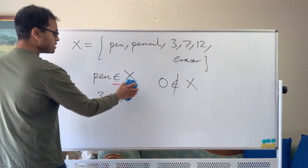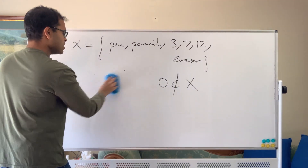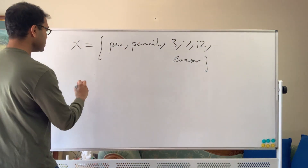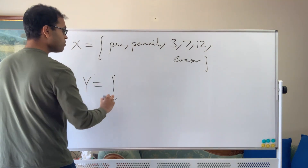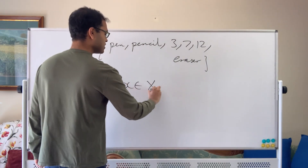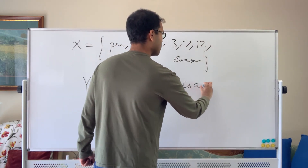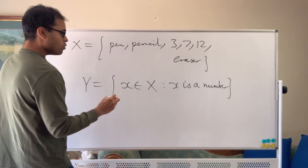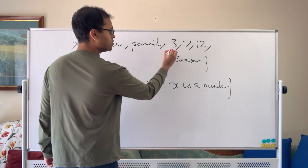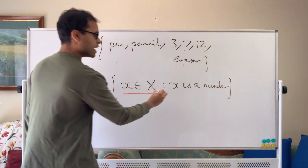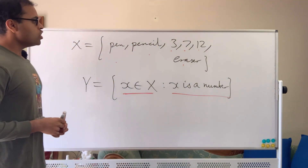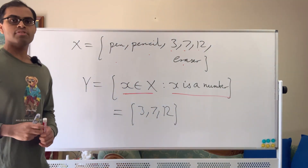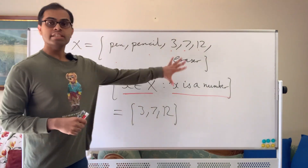Now I'm going to define a new set from x — all the things in x that are numbers. We call it y: y is the set of all x in x such that x is a number. So from {pen, pencil, 3, 7, 12, eraser}, we're just including everything that is a number, which gives us y = {3, 7, 12}. That is the set y.